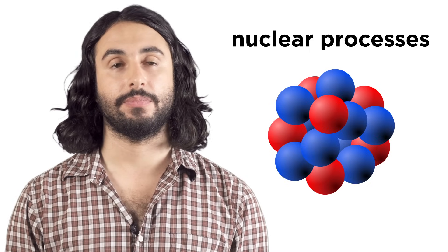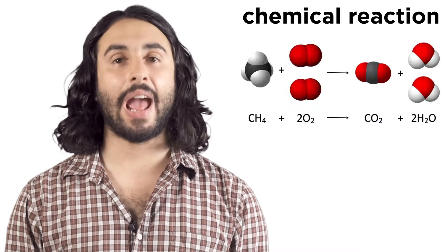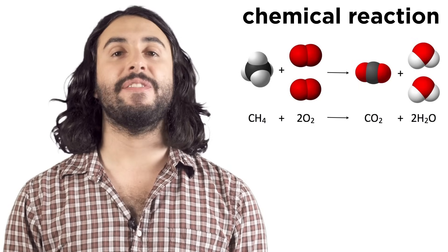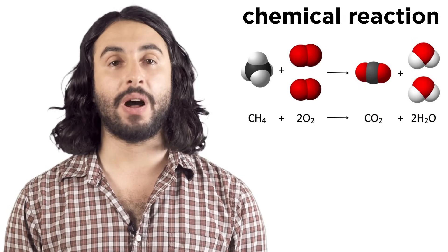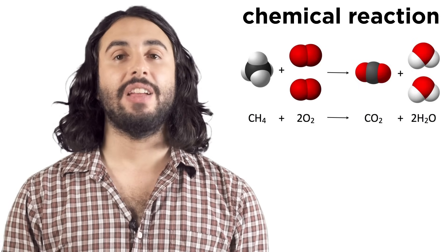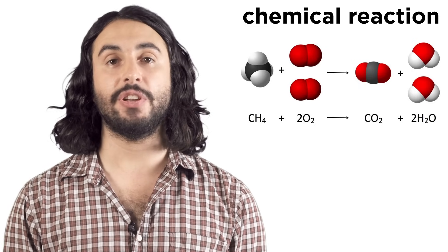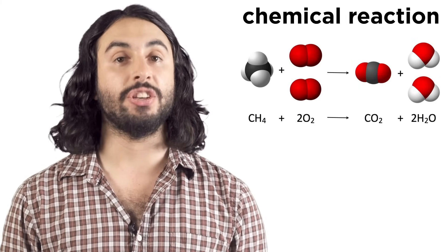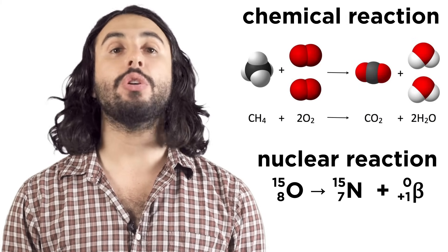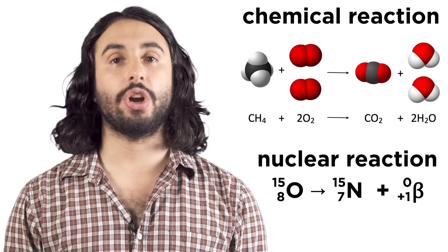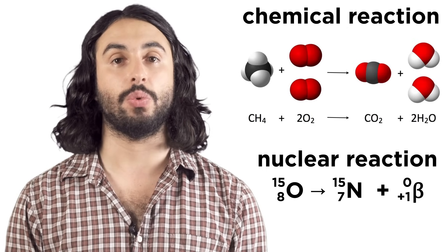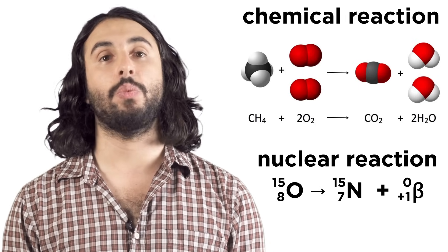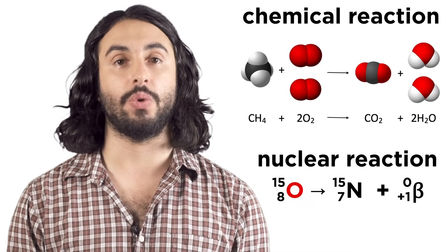So we need to know a bit about them. To reiterate, in a chemical reaction, only the valence electrons of atoms are rearranging when chemical bonds break and form. The identity of each individual atom remains unchanged. In a nuclear reaction, changes occur to the fundamental particles in the nucleus of an individual atom, which means it will change from one element to another.